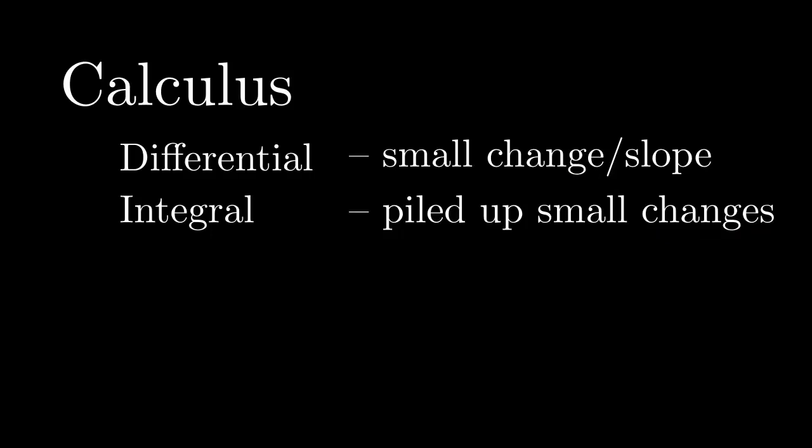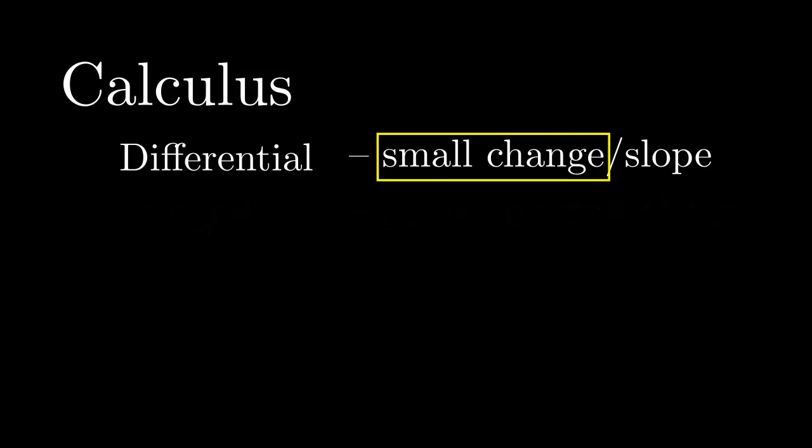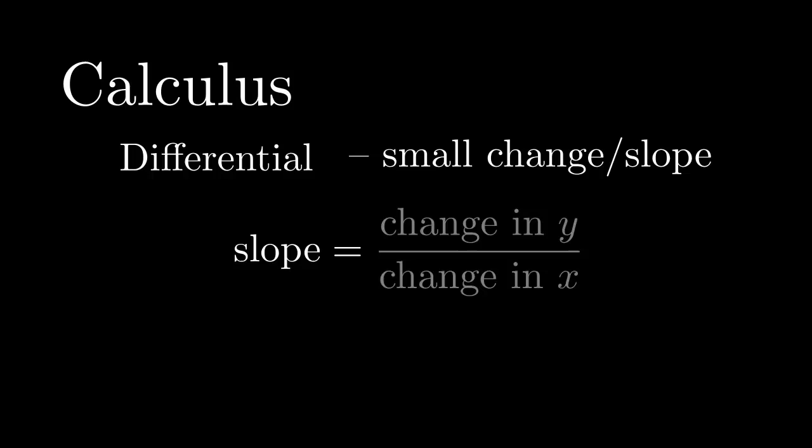Let's start with differential calculus, which is about small changes. Mathematicians call the small change a slope. More precisely, a slope is a ratio of two changes. Geometrically, a slope is a tangent line of a curve. I could say it is steepness.